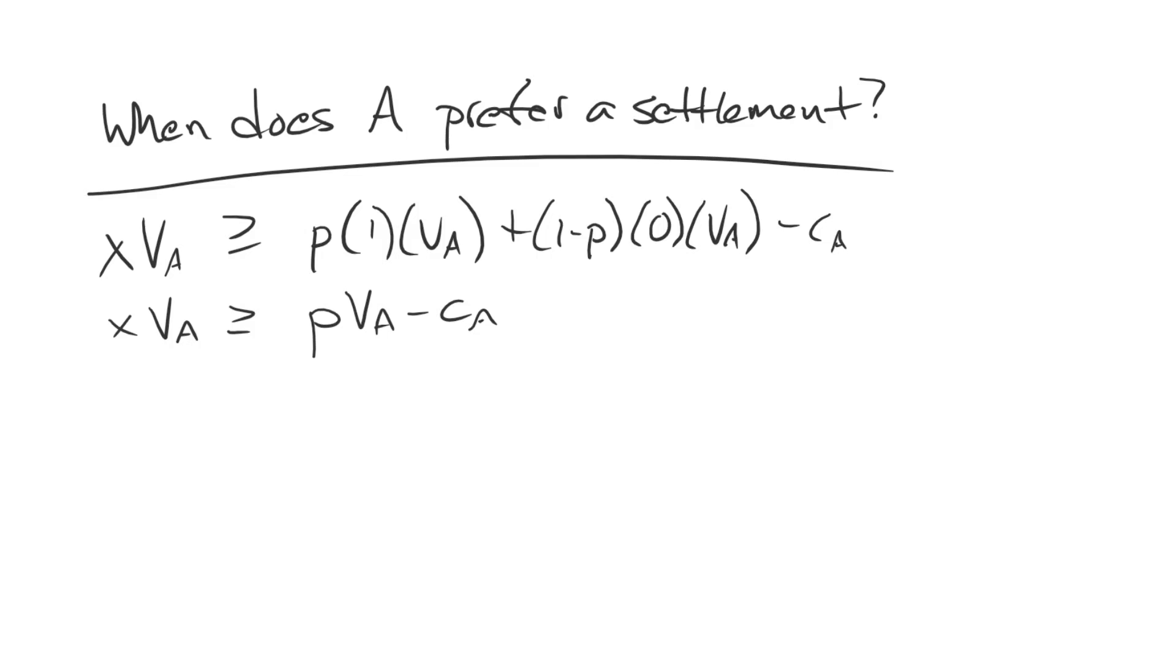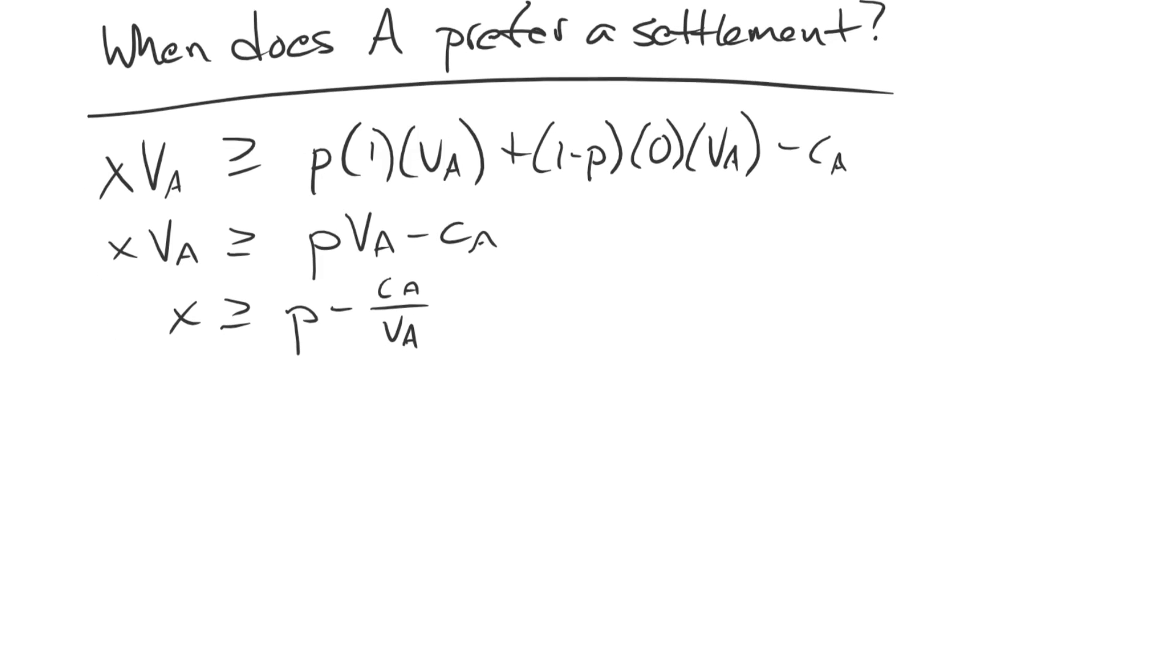We can do a little bit of simplifying. The one and multiplication and zero entirely cancel out. So we have X times VA is greater than or equal to P times VA minus CA. And if we're thinking about the actual settlement, the settlement itself is X. So we need to divide everything by VA. And if we do that, we get X has to be greater than P minus CA divided by VA.